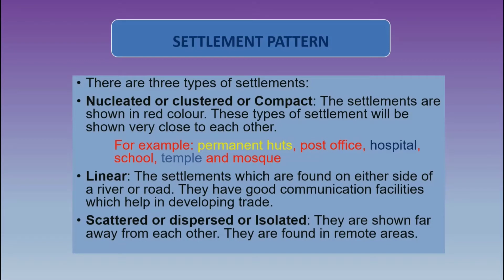Settlement patterns. When we talk about settlement patterns, there are three types of settlements. The first one is nucleated, also known as clustered or compact. These settlements are shown in red color and are very close to each other. For example, permanent huts, post office, hospital, school, temple and mosque — all these man-made things shown in red color are close to each other, so they are called nucleated.